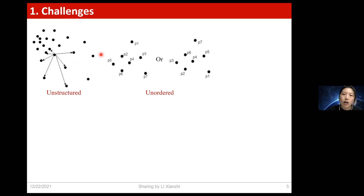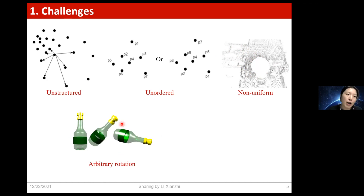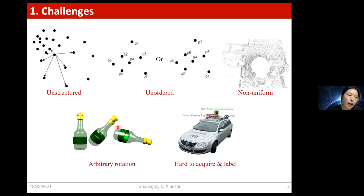The third challenge is that real scanned points are often not evenly distributed across different regions — some regions may be very dense while others may be very sparse. This is the non-uniform property. Also, an object in 3D space can be rotated arbitrarily, and no matter how it is rotated, it is still the same object. How to ensure that extracted features are not sensitive to object orientation is also a challenge. Additionally, compared with 2D images, 3D data is harder to acquire and label, so how to maintain algorithm stability with limited training resources is worth exploring.